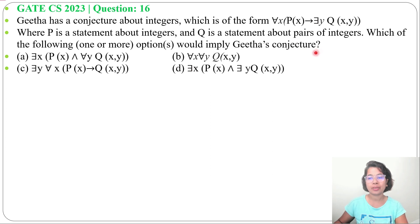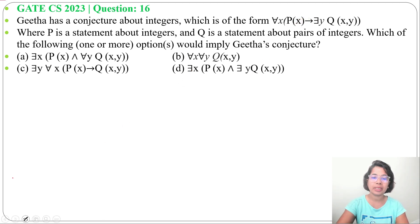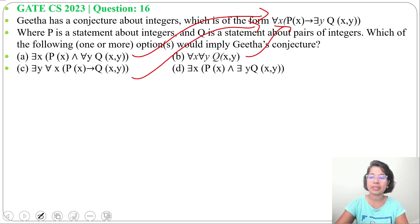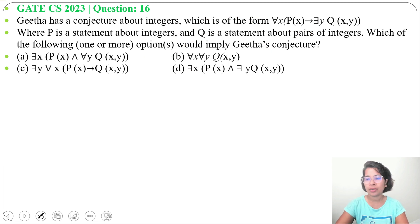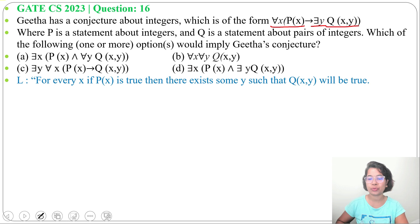Conjecture means one conclusion from incomplete information. She has this conclusion and we need to find from which option she got this conclusion — meaning we need to check from which premises we can get this conclusion. For all x, P(x) implies there exists y, Q(x,y). So for every x, if P(x) is true, then there exists some y such that Q(x,y) is true.